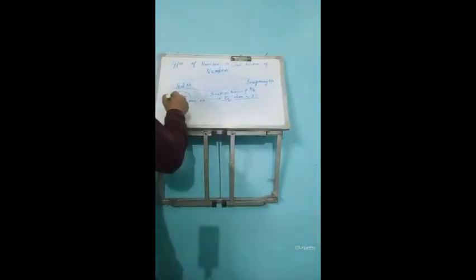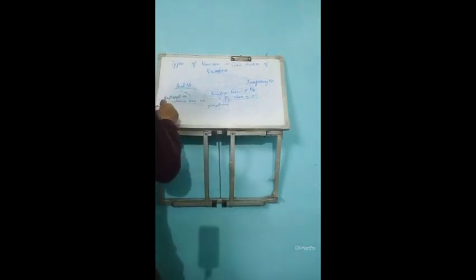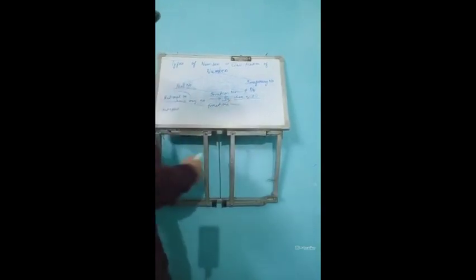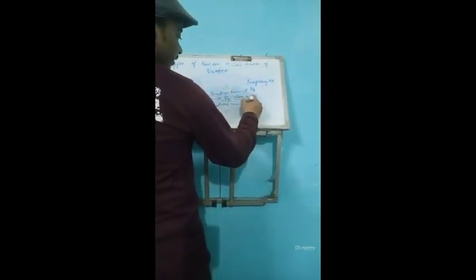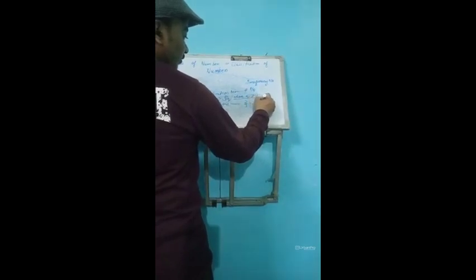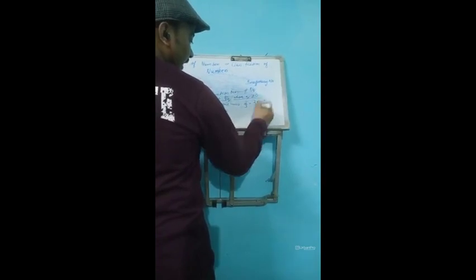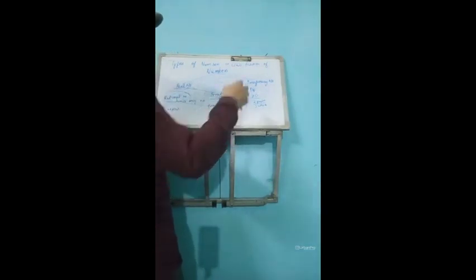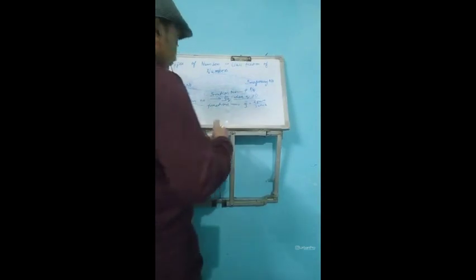Now rational number is further divided into fractions and integers. So fraction is nothing but when we represent part of something. For example, there are three toffees. If I select two toffees, then we can represent the selected toffees as two by three, which is two part of the total three toffees we have selected.